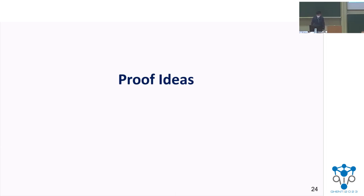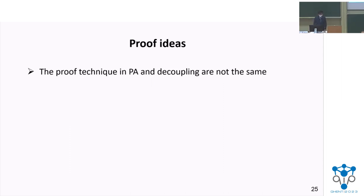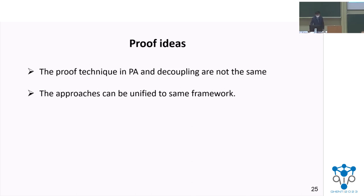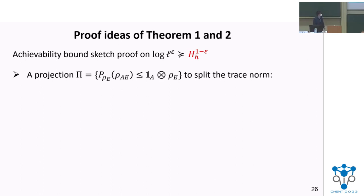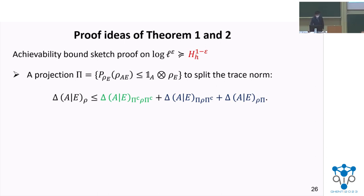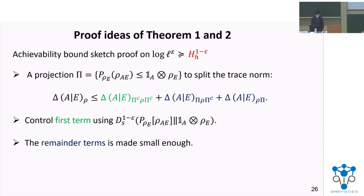Now we talk about the proof ideas of our one-shot characterization. The proof techniques in privacy amplification and decoupling are technically not the same. However, their approach can be unified to the same framework for analyzing the trace distance error. Our proof is segmented into the achievability part and the converse part. For the achievability part, we first define a projection to compare the initial state to the decoupled state, and use this projection operator to split the trace norm into three terms. We can control the first term using the information-spectrum divergence, and the remainder terms can simultaneously be made small enough. We then relate the information-spectrum divergence to hypothesis-testing entropy to finish our proof.